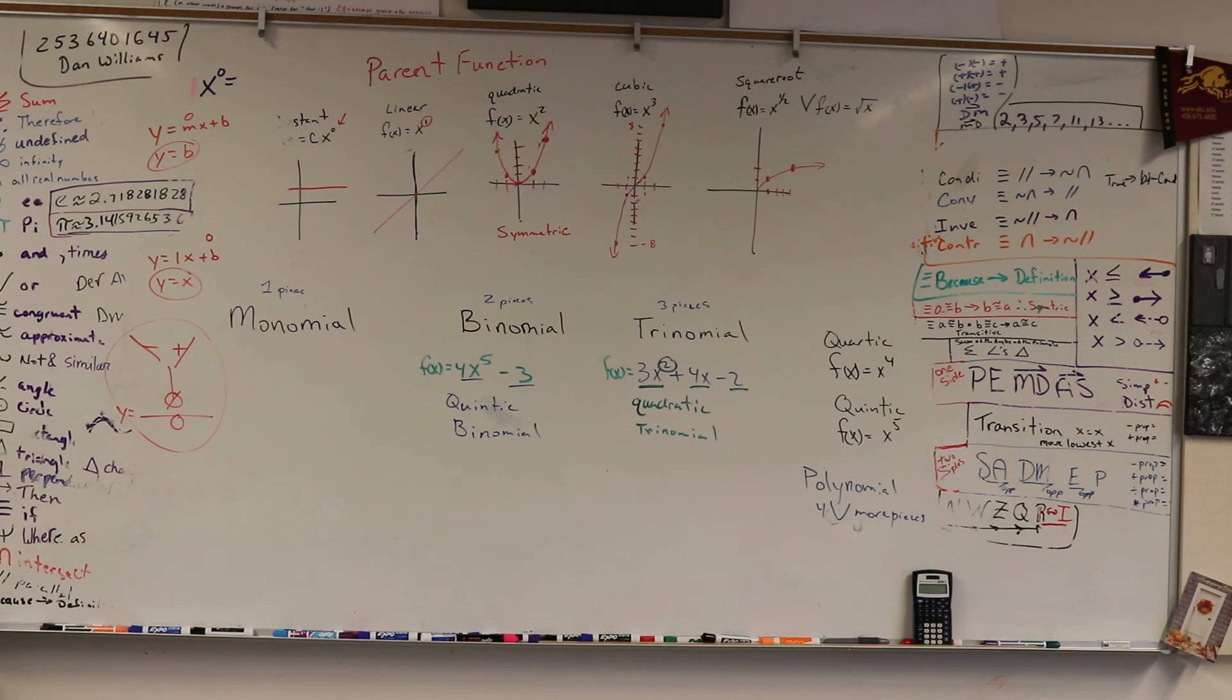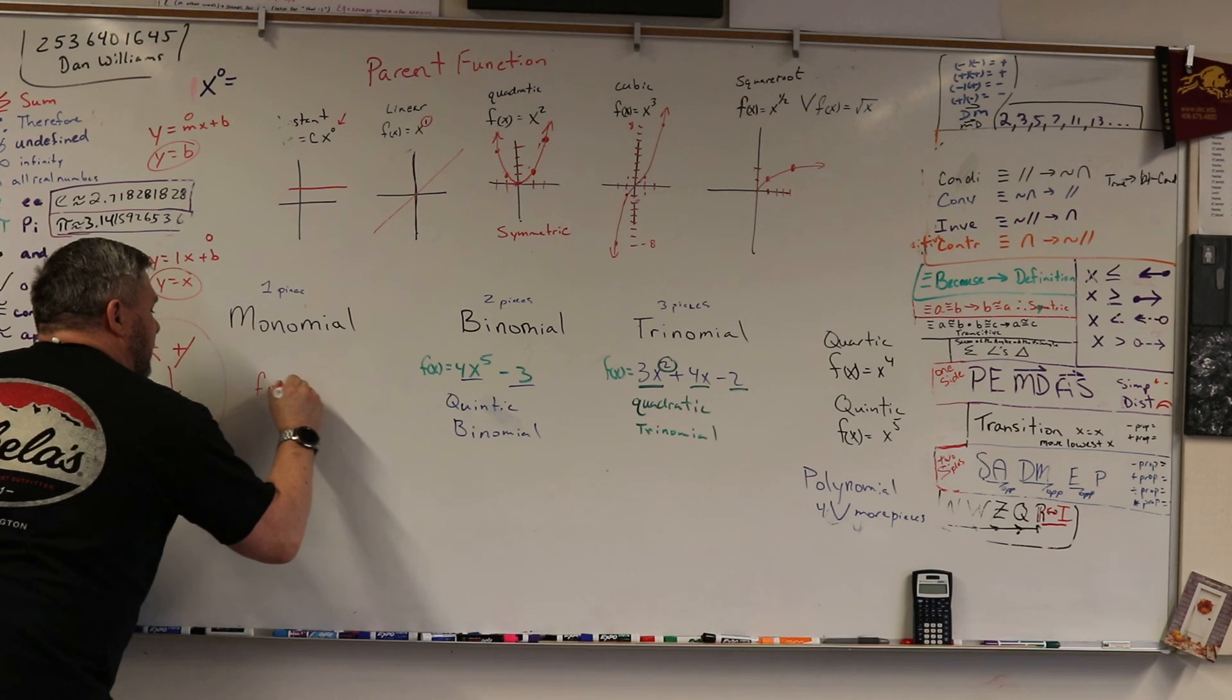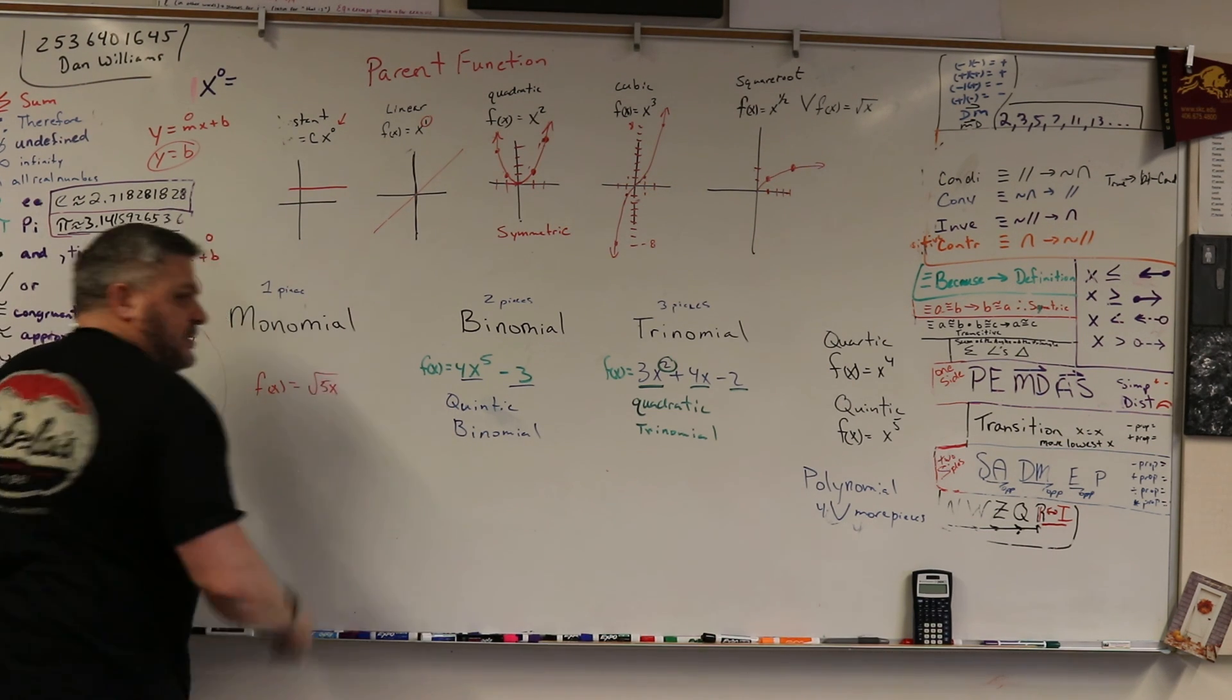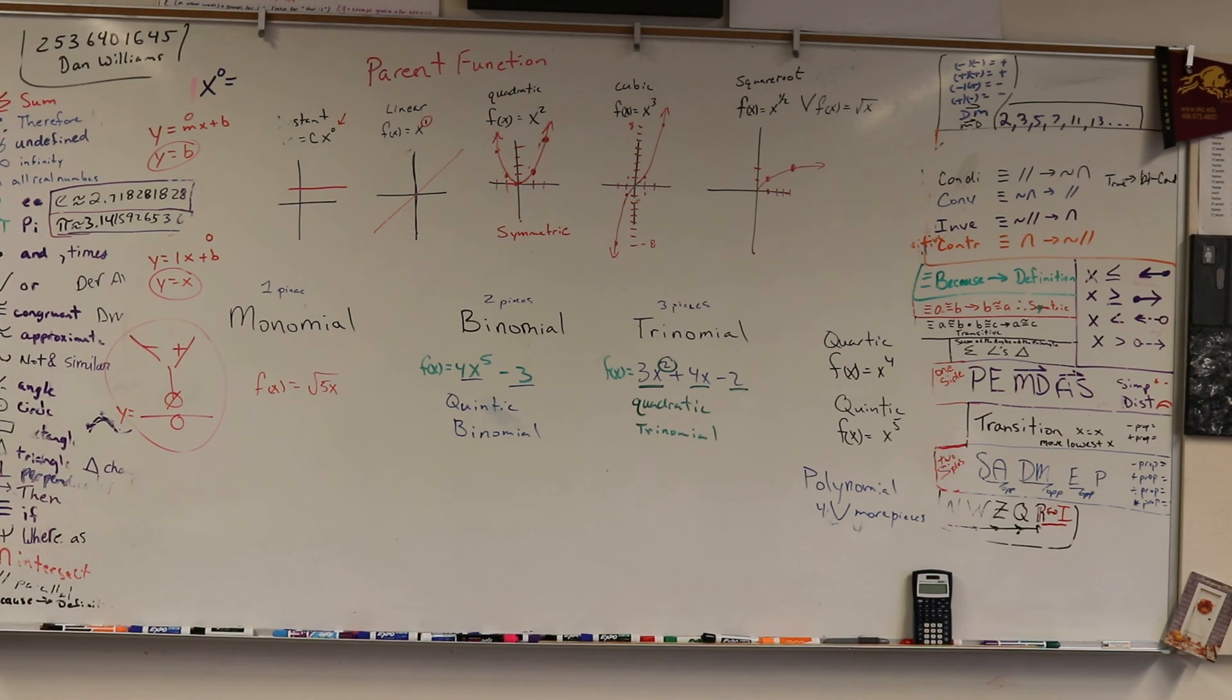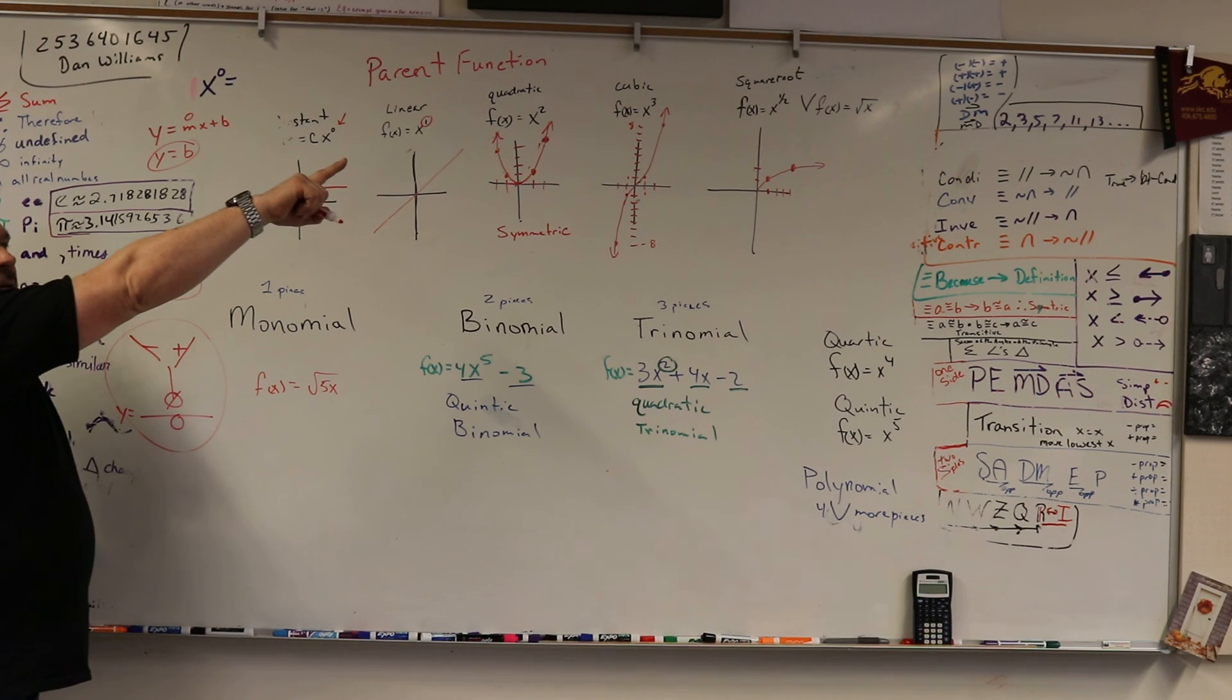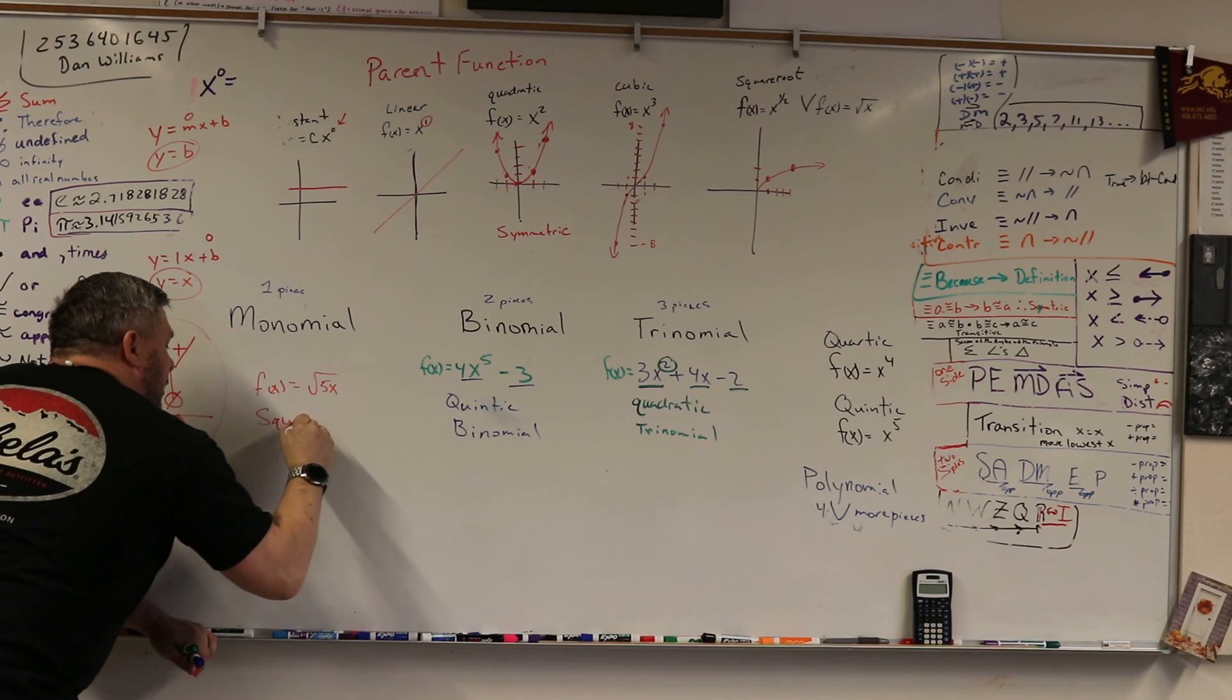All right. What's the monomial? Ready? Here we go. F of x equals the square root of five x. So what kind of polynomial is that? F of x equals the square root. So that's a square root.